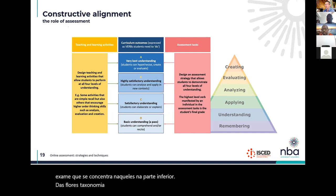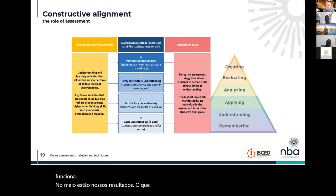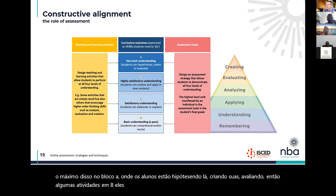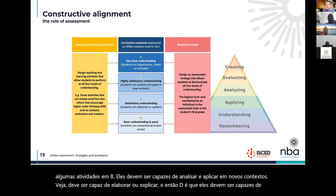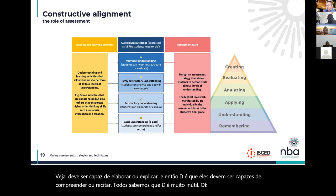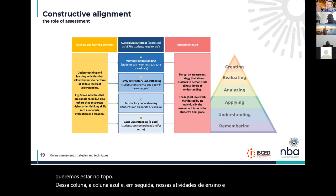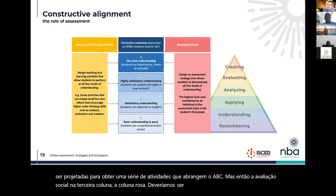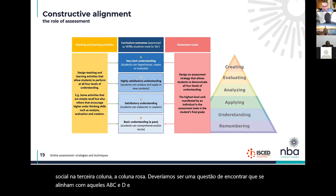In the constructive alignment diagram on screen, outcomes are in the middle. We want as much as possible in block A — students are hypothesizing, creating, evaluating. Block B: they analyze and apply in new contexts. Block C: they elaborate or explain. Block D: they comprehend or recite — we all know that D is pretty useless. Our teaching and learning activities should cover A, B, C, and D, and so should our assessment in the pink column. We should be finding questions that line up with those levels. That's why constructive alignment should be part of both our course design and our assessment design.